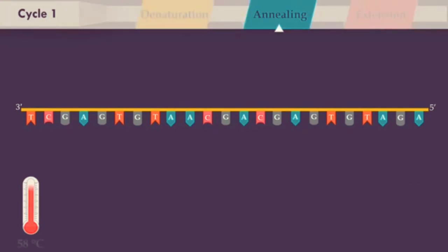In the next step, the reaction temperature is lowered to 58 degrees Celsius, allowing annealing of the forward primer to its complementary part of the single-stranded DNA template. The annealing temperature relies directly on length and composition of the primers.